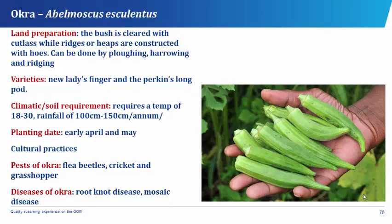Okra has different varieties which include the new lady's finger and the packing's long fork. The climatic or soil requirement of okra is a temperature of about 18 to 30 degrees centigrade and a rainfall of about 100 cm to 150 cm per annum and a well-drained loamy soil. The method of propagation of okra is by seeds and the planting date is early April and May. The spacing should be about 60 cm by 60 cm. Seeds are planted directly into beds, 2 to 3 seeds per hole, which should be 3 cm deep. Germination occurs as from the 5th day after planting.